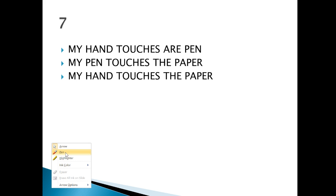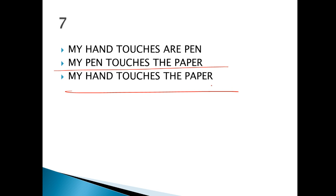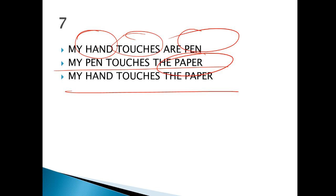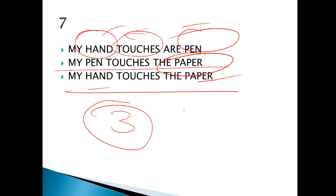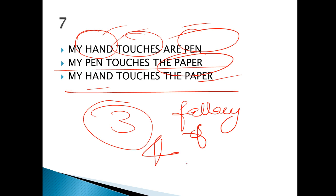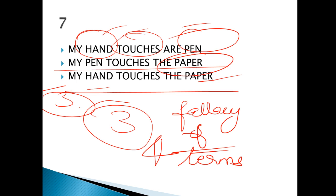Last question of the day: 'My hand touches the pen, my pen touches the paper, my hand touches the paper.' Here, look — hand, touches, pen, paper — that gives us four terms. But in reality, how many terms should there be? Only three. That's why this is a fallacy of four terms.